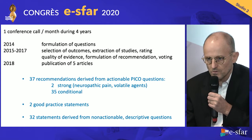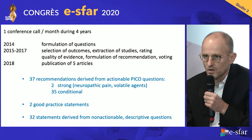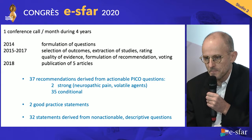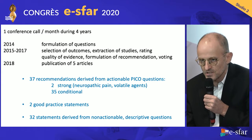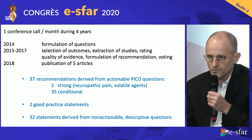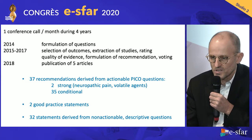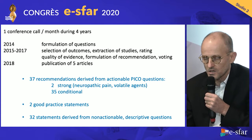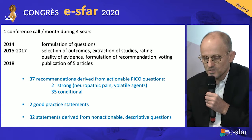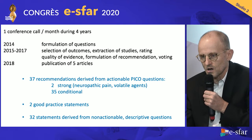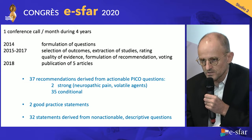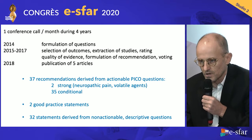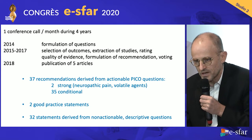We made two strong recommendations. First, regarding the use of neuropathic pain medications in addition to opioids to treat pain with neuropathic components. The second was to not recommend the use of volatile agents to treat procedural pain.